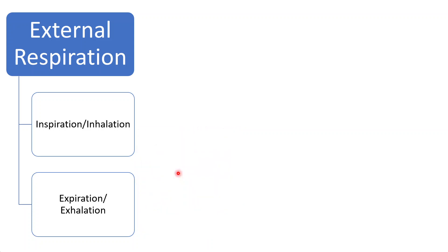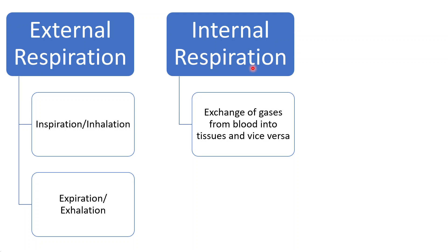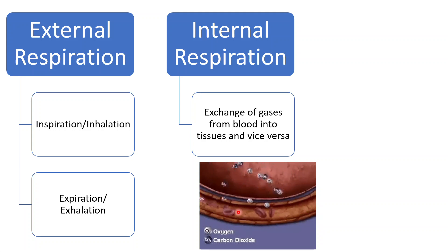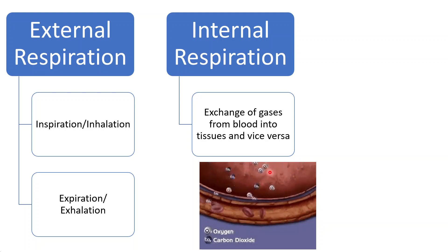In internal respiration, exchange of gases takes place from the blood into tissues and from the tissue into the blood. The disc-like cells visible here are red blood cells. Oxygen from the blood enters the tissue, and carbon dioxide from the tissue enters the blood.